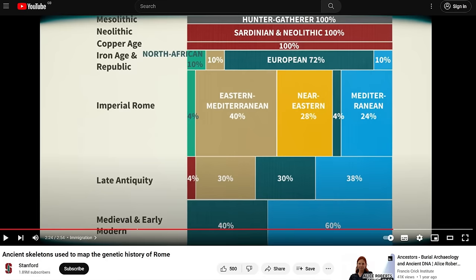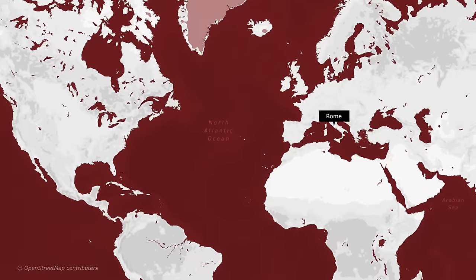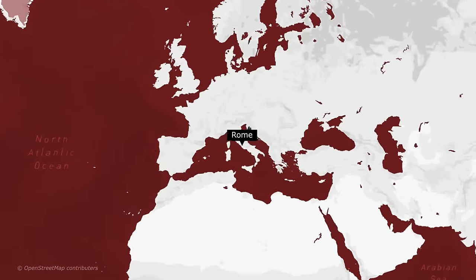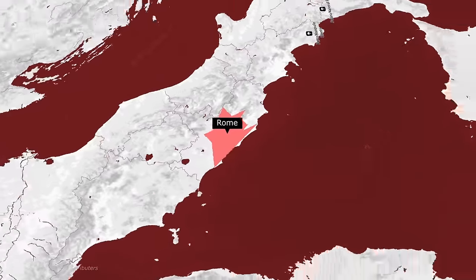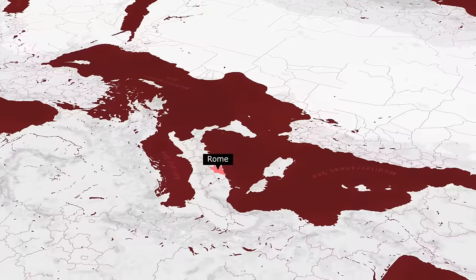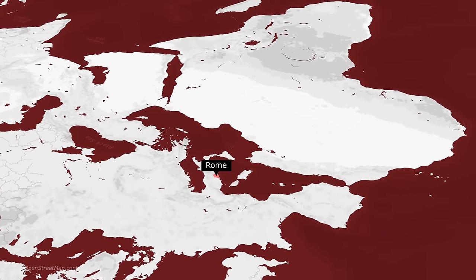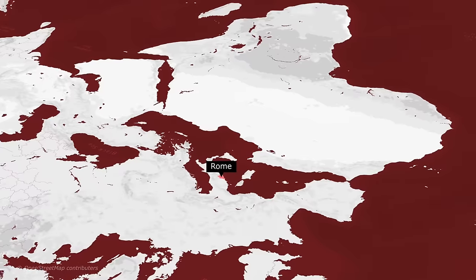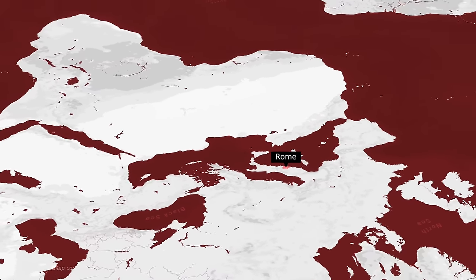In the words of Jonathan Pritchard, a professor in the departments of Genetics and Biology at Stanford University and an author of this study: 'One of the most interesting things that we see is that during the first century CE — really the heart of the Imperial period — there is a huge amount of immigration coming into Rome, mainly from the Near East, coming either directly or indirectly. And that's enough to actually shift the average ancestry of people living in Rome to look much more East at that time.'